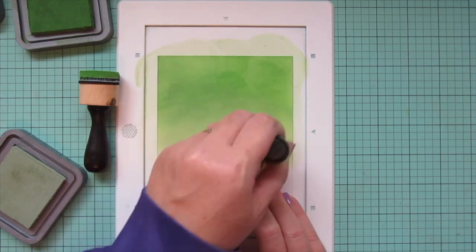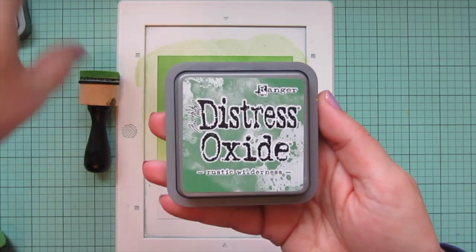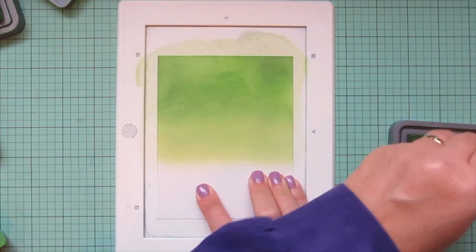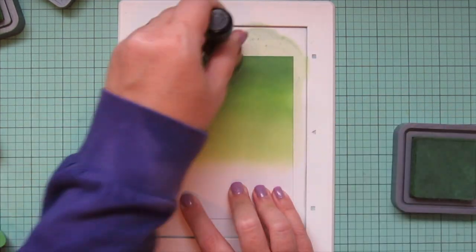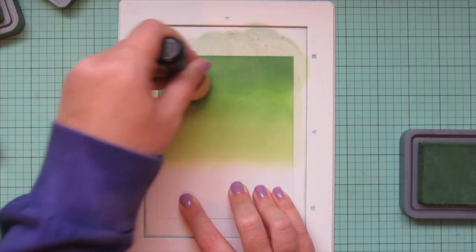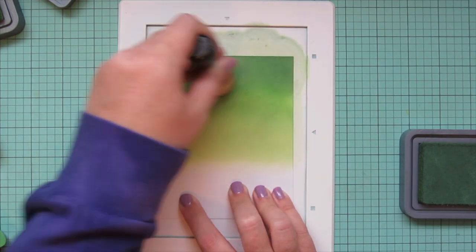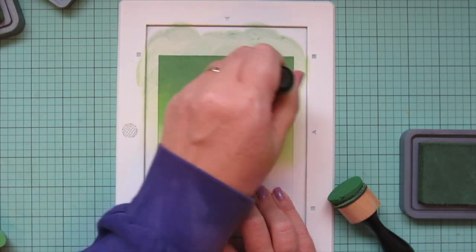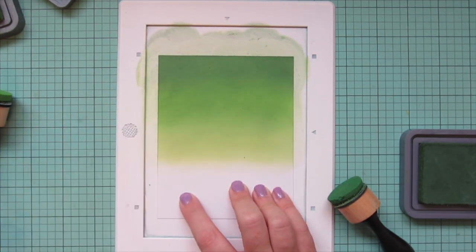And then my darkest shade that I'm going to add in is rustic wilderness so I'm going to blend that in at the top and bring that down just a little bit maybe like a third of that green space I want to be that darker shade so I'm going to apply that on until it's nice and heavy and I have the depth of color that I want and then I'll go back down once again blending everything out.